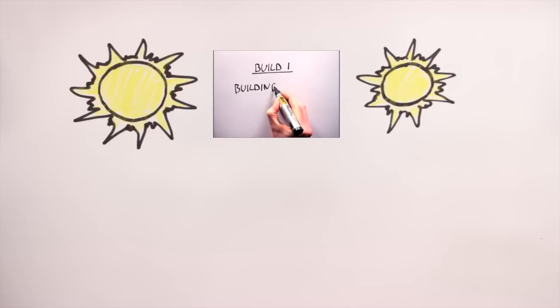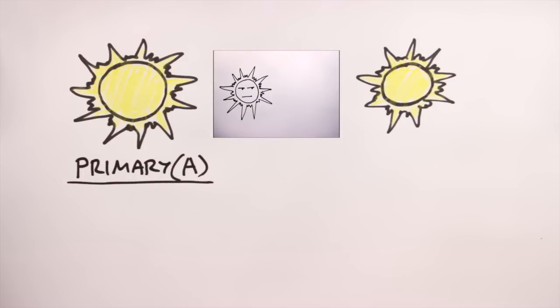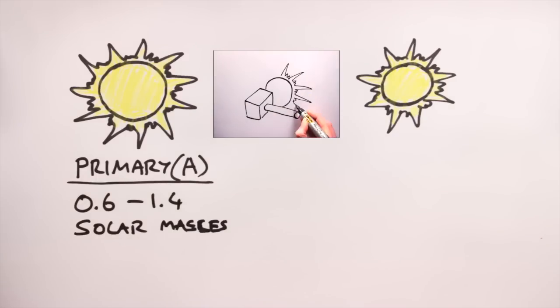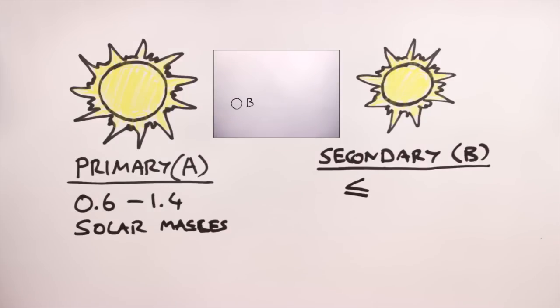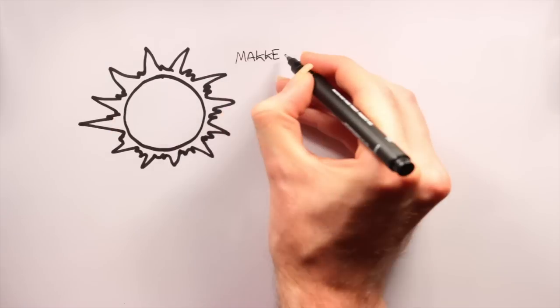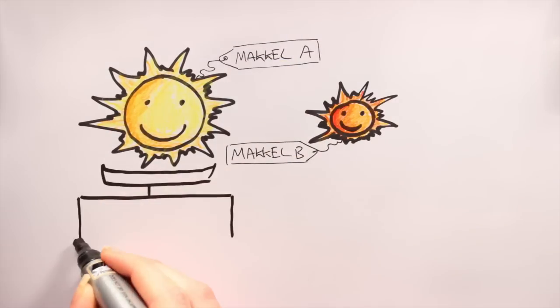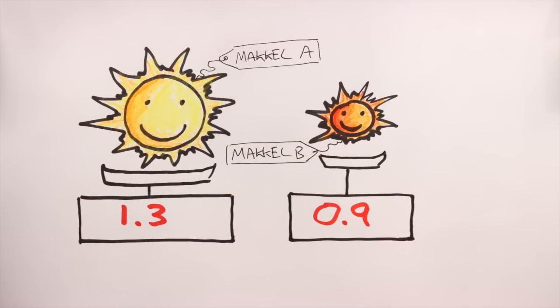Under twin suns. Firstly, we have to construct not one but two stars. If you don't know how to build a star, no problem. Click the links on screen or in the description to find out how. Make sure though that your primary star, the most massive of the pair, has a mass between 0.6 and 1.4 solar masses. The secondary, or companion star, must be less than or equal to it in mass. However, don't have the secondary star be less than 0.08 solar masses, or else it's no longer a star. Here's my two stars, Mikkel A and B. I've given them masses of 1.3 and 0.9 solar masses. Note that Mikkel A is my primary star, and Mikkel B is its secondary companion.